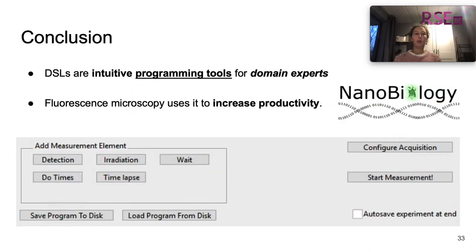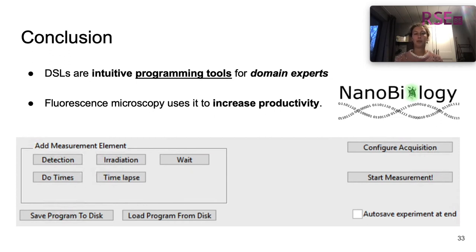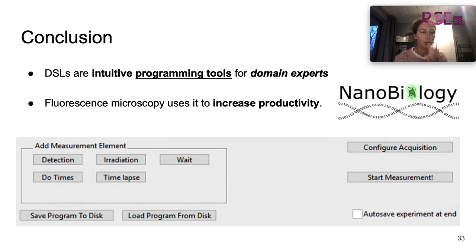So let us conclude. Domain-specific languages or DSLs are intuitive programming tools for domain experts. Fluorescence microscopy benefits from it by using it to increase productivity — that's why we may have a corona vaccine in a few months. It is already actively used at the nanobiology group at KU Leuven. They use a specific interface to construct their programs, where buttons correspond to the data type constructors we defined — these are the smaller building blocks that they can compose in different ways.